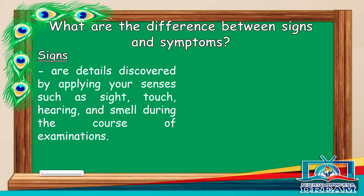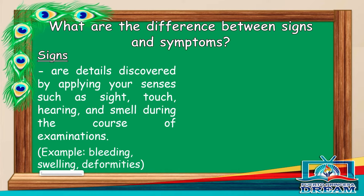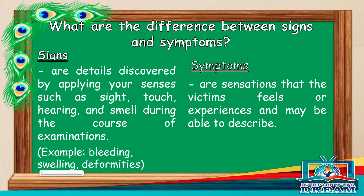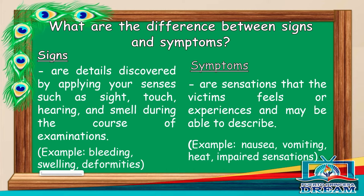What is the difference between signs and symptoms? Signs are details discovered by applying your senses such as sight, touch, hearing, and smell during the course of examinations. For example: bleeding, swelling, deformities. Symptoms are sensations that the victim feels or experiences and may be able to describe. For example: nausea, vomiting, heat-impaired sensations.